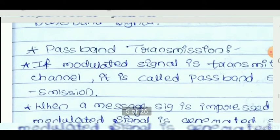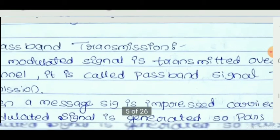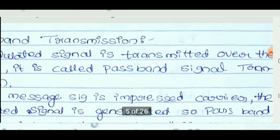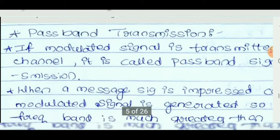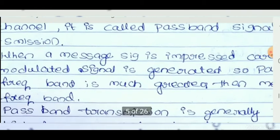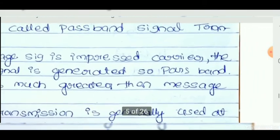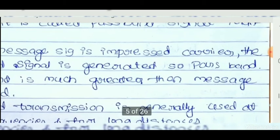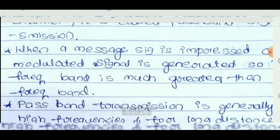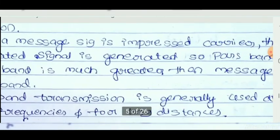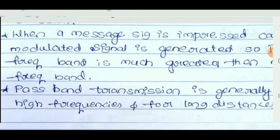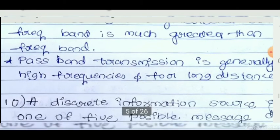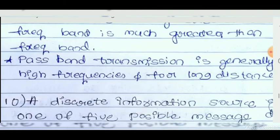Coming to passband transmission: if a modulated signal is transmitted over the channel, it is called passband signal transmission. When a message signal is impressed onto a carrier, the modulated signal is generated. The passband frequency band is much greater than the message frequency band. Passband transmission is generally used at high frequencies and for long distances compared to baseband signals.